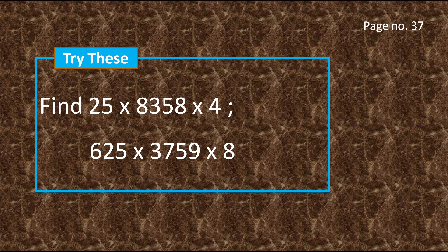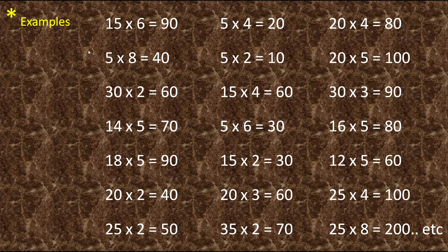On page number 37, you have one more 'Try This' box with two more equations which involve multiplication. We must be able to recognize the combination of numbers that will give us a multiple of 10 when multiplied, so it will be easier to multiply the answer with the next number. For example, 15 times 6 is 90, which is a multiple of 10. Similarly, 5 times 8 is 40, also a multiple of 10.